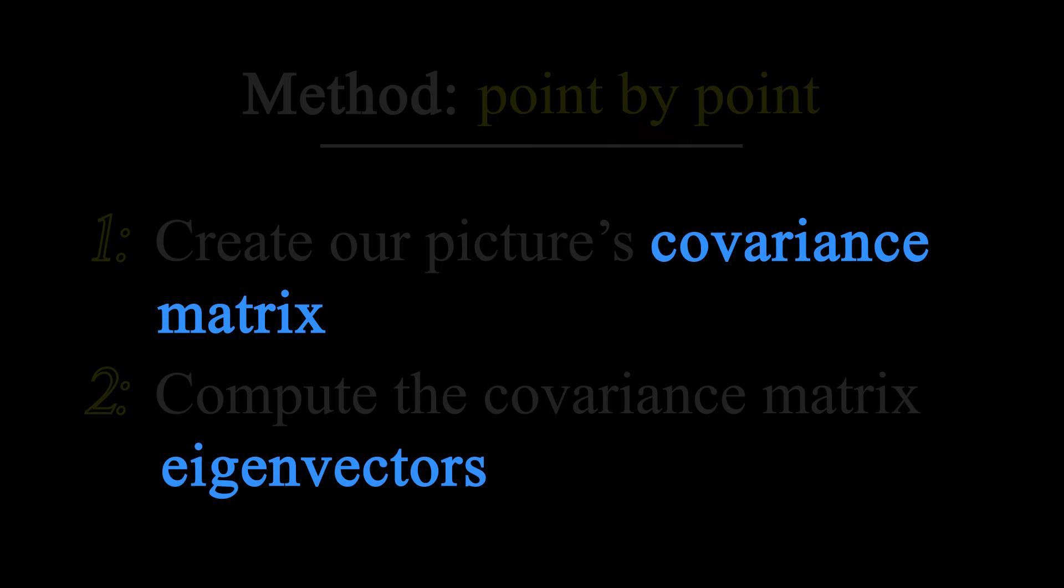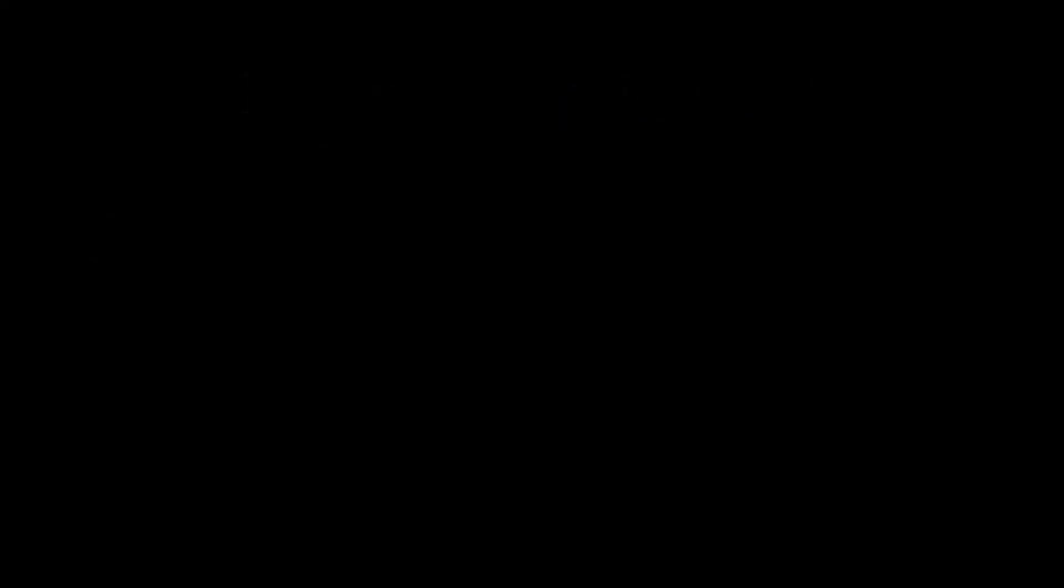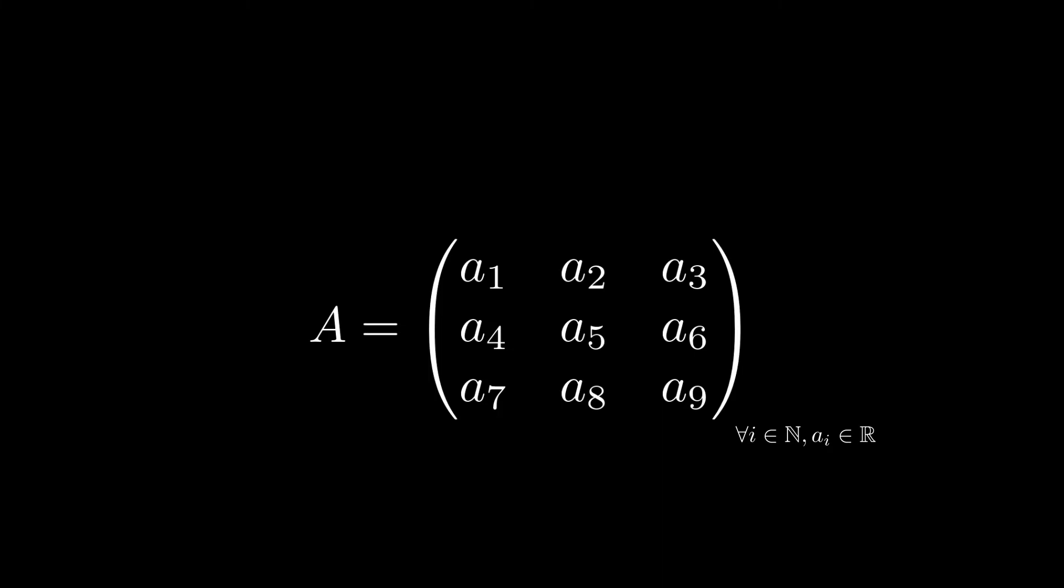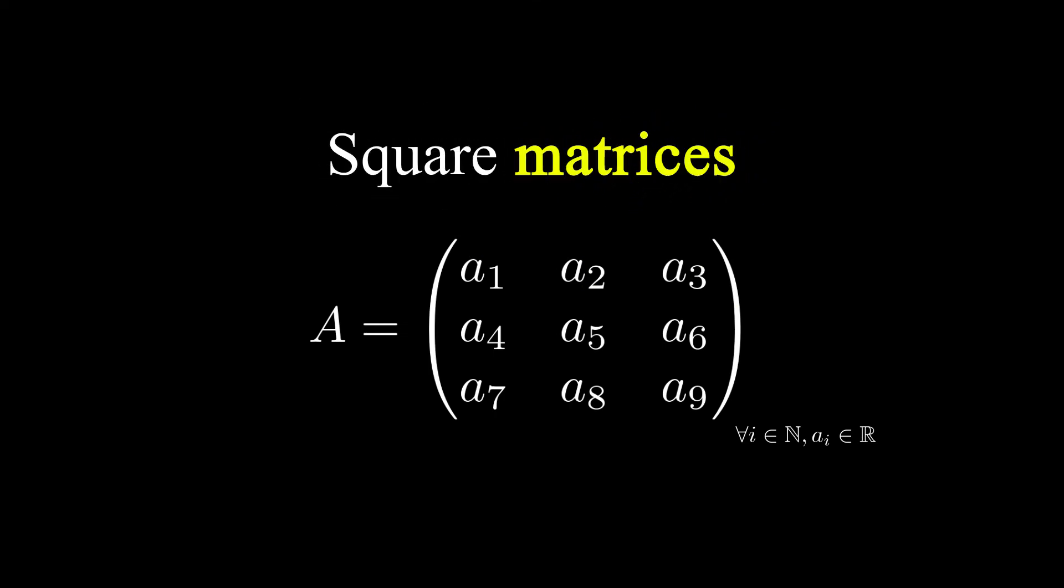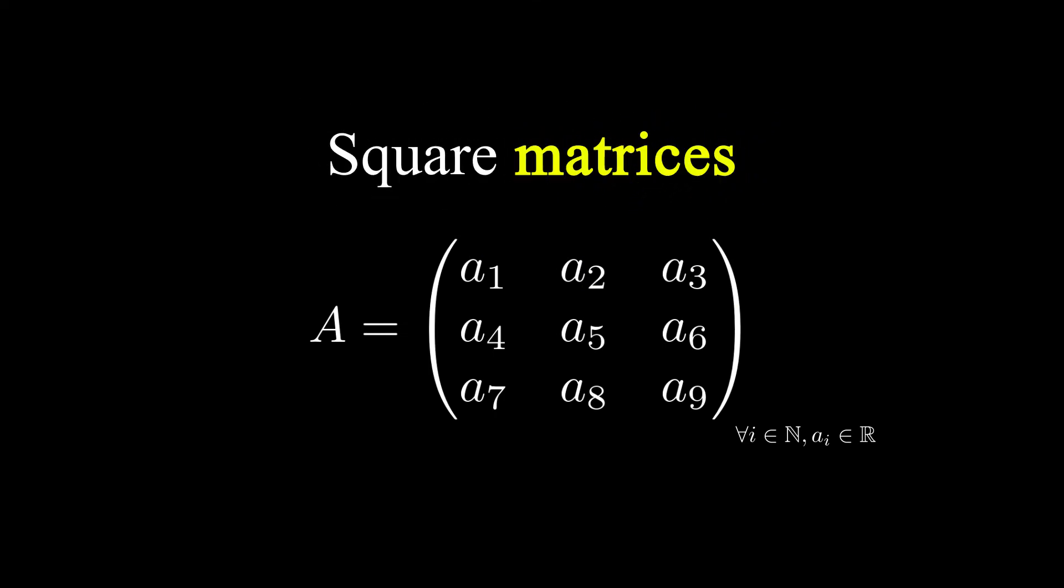I'm going to explain this right now, and give you the intuition to have behind this unintuitive process. A matrix can be written down as an array of values. Matrices can be of any shape, but the most common and useful ones are square matrices. Here, we will only look at 2x2 matrices.